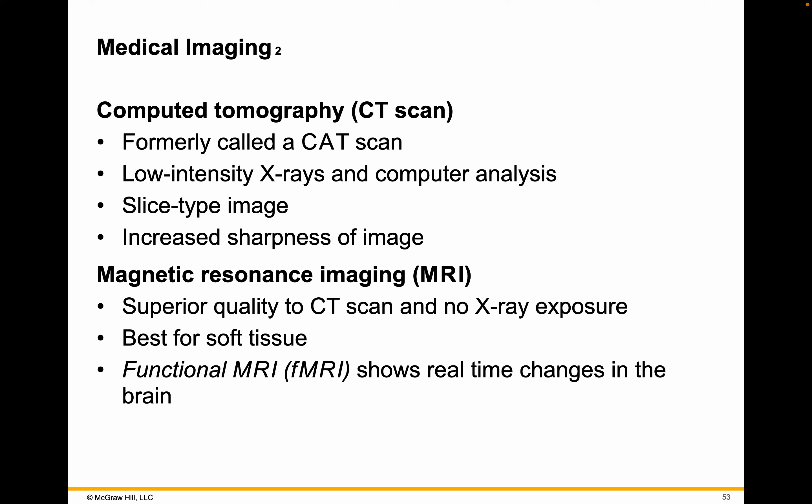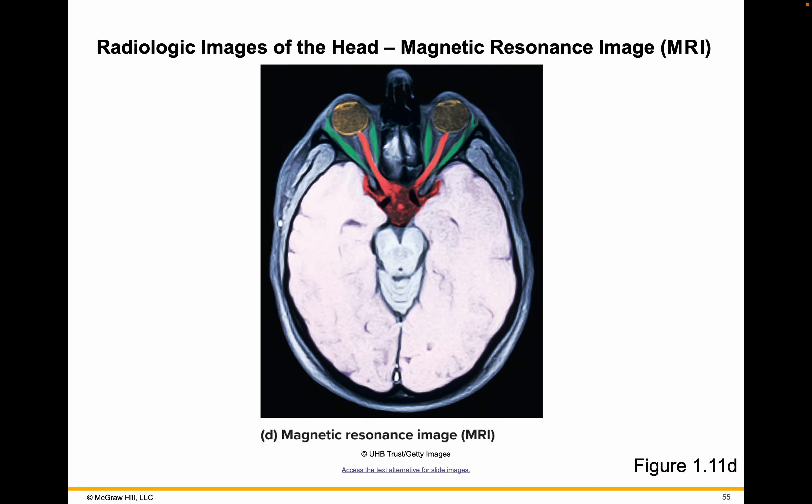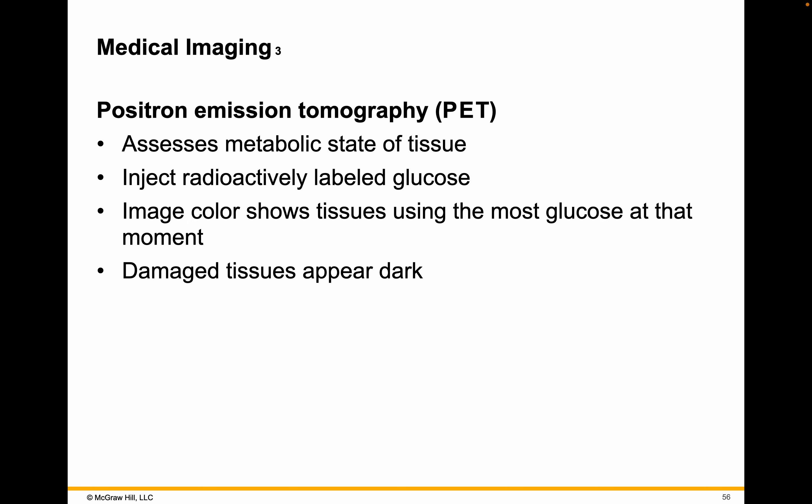Magnetic resonance imaging gives you higher quality than a CT scan and no x-ray exposure. MRIs are great for soft tissue, much better than x-rays. A functional MRI, when we talk about the brain, shows metabolic changes occurring within the brain. Positron Emission Tomography — PET — assesses the metabolic state of tissues using injected radioactively labeled glucose. Image colors show tissues that use the most glucose at that moment, and damaged tissues appear dark under such imaging.